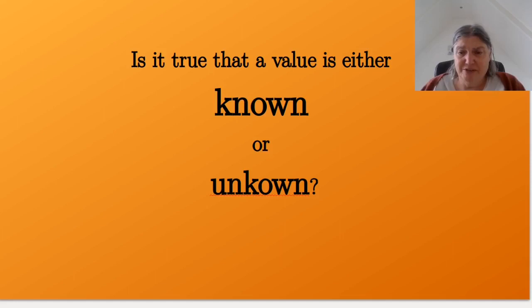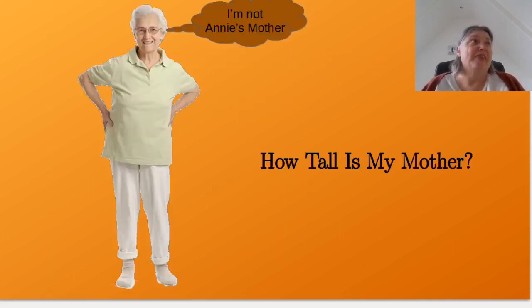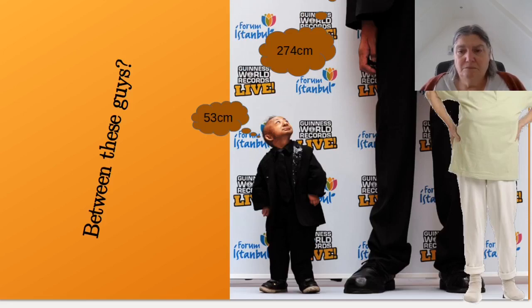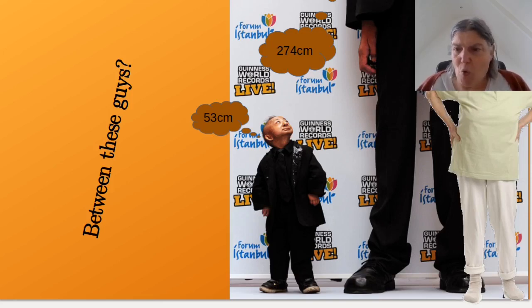Is it true that a value is always either completely known or completely unknown? Well, let's think about a value — how about my mother's height? Probably nobody here knows my mother's height, but we know some things about it. The tallest person ever was 274 centimeters tall, and the shortest person is 53 centimeters tall. So my mom's probably between those two values.